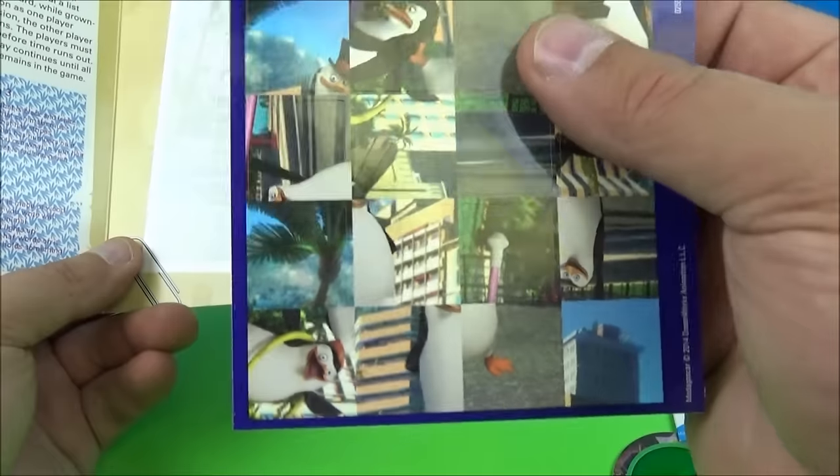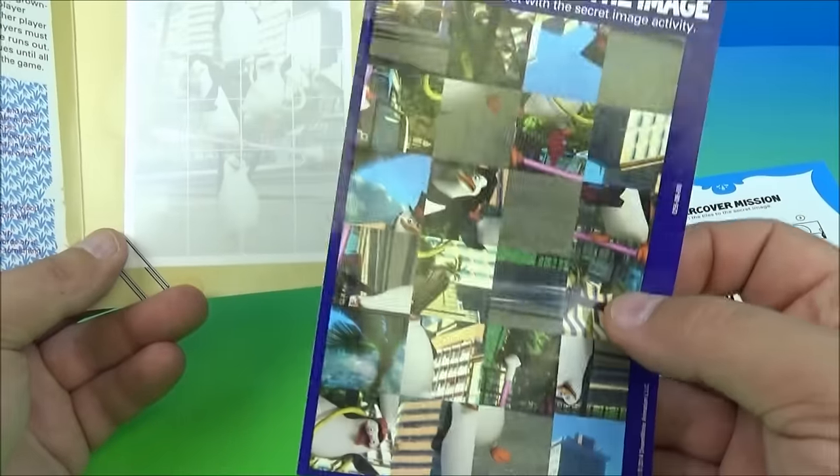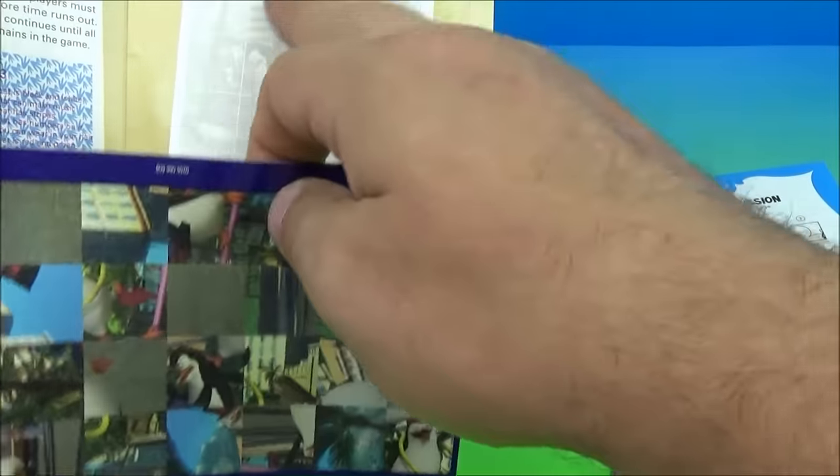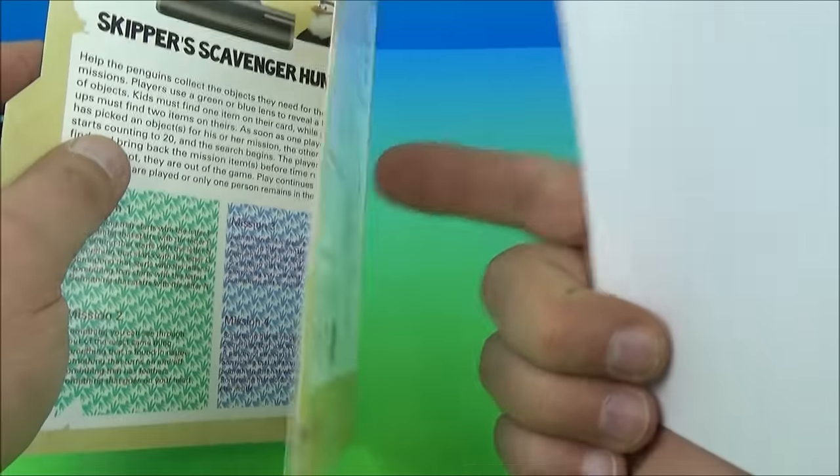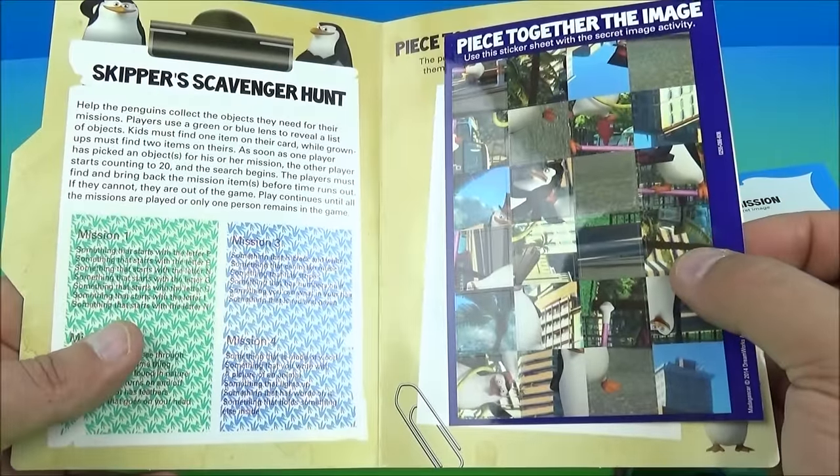And then right here looks like we have a puzzle. It's actually stickers, oh man I love stickers. So you got all these stickers and what you do is you take the stickers, you place them on here and piece together the secret image. This is awesome, scavenger hunt there. And of course on the back here all the answers to all the puzzles and whatnot. This is just a great set right here.